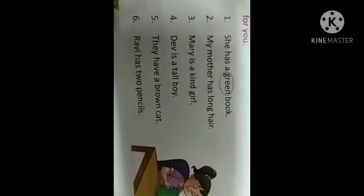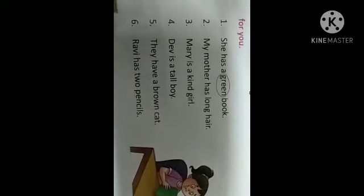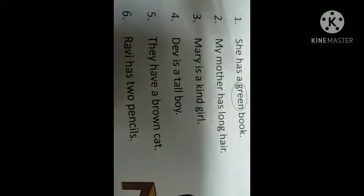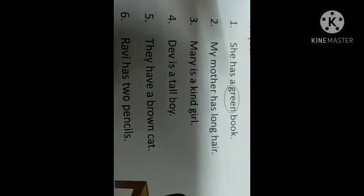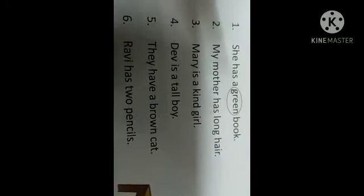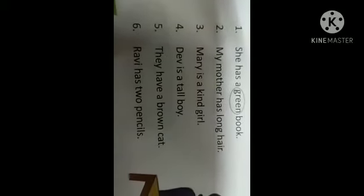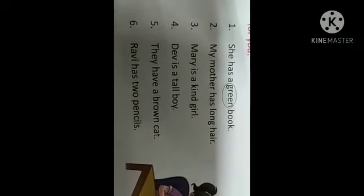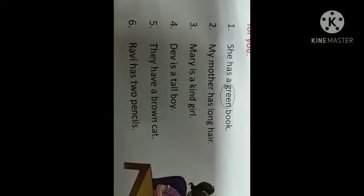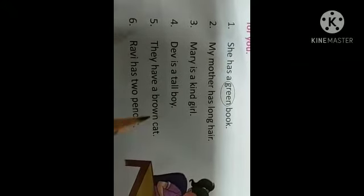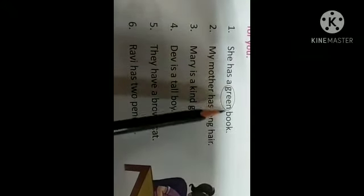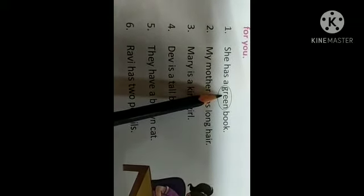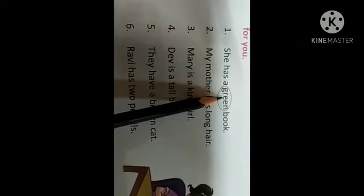Now let's do exercise A. Circle the describing words in these sentences. One has been done for you. First one is, she has a green book. Book is a noun. Remember children, most of the describing words are written before noun. She has a green book, book is a noun. Before that, describing word is written. Describing words are called adjectives.